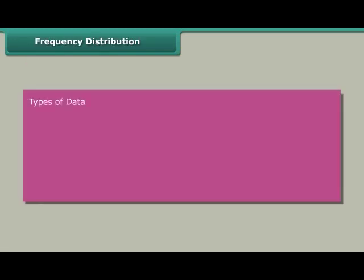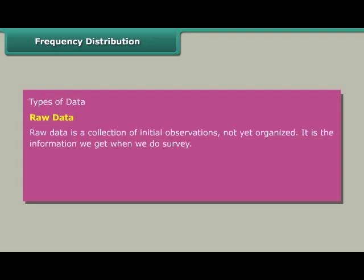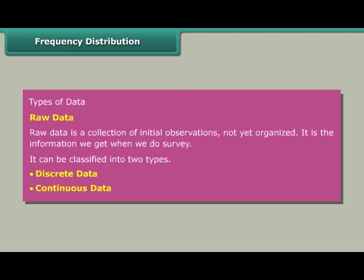Types of data. Raw data is a collection of initial observations not yet organized — it is the information we get when we do a survey. It can be classified into two types: discrete data and continuous data.